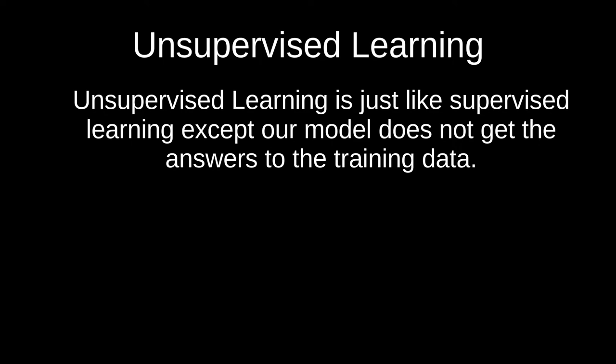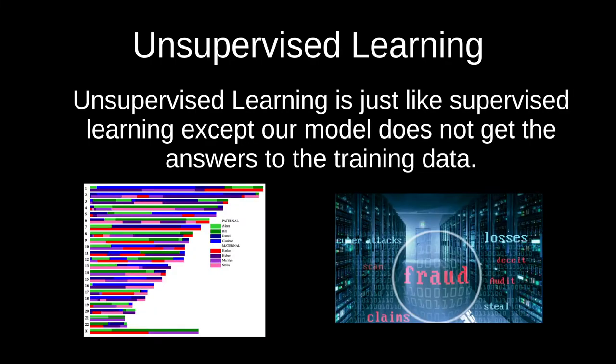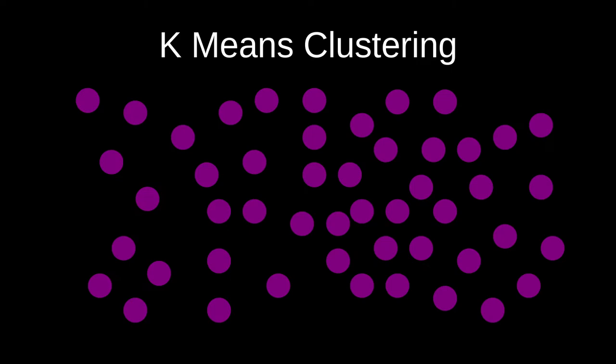K-means clustering is just one example of an unsupervised learning algorithm. Where it could be used — for example, if you want to differentiate DNA tests, you could use that. And it's also used for fraud detection. So let's get into how it works.